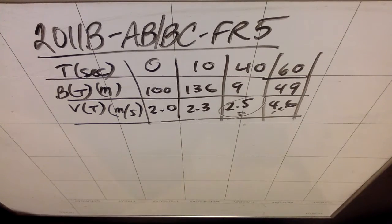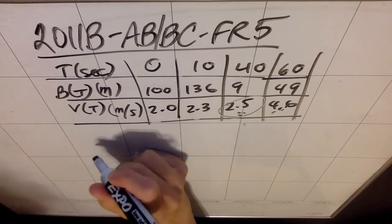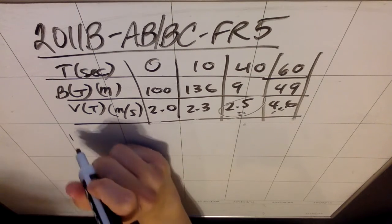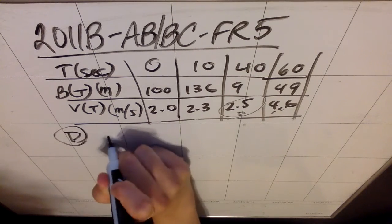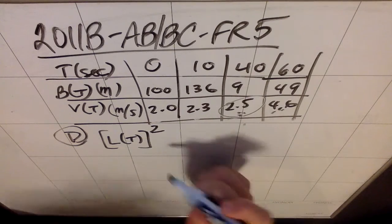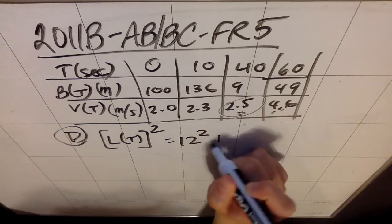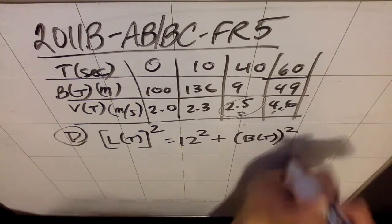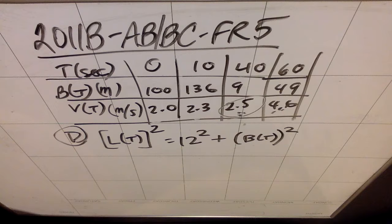Part D: A light is directly above the western end of the track. Ben rides such that at time T, the distance L(t) between Ben and the light gives this equation. In part D, L(t) quantity squared equals 12 squared plus B(t) quantity squared. At what rate is the distance between Ben and the light changing at t equals 40?